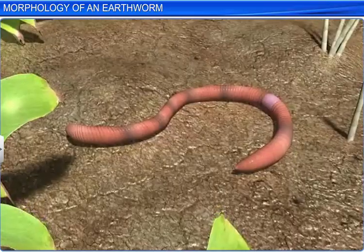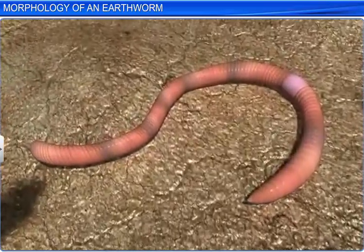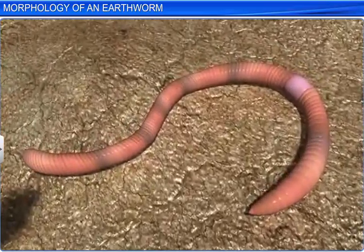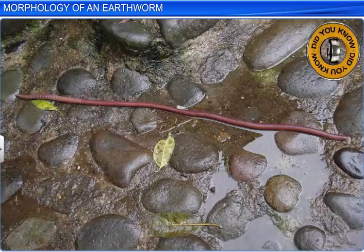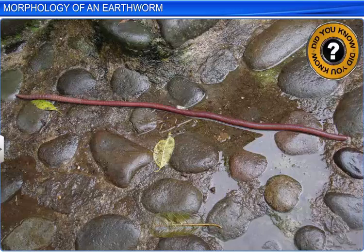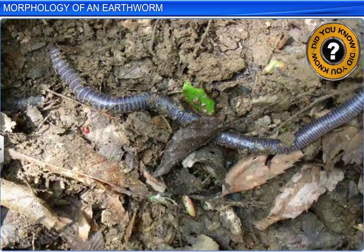Earthworms have a long cylindrical body that is divided into similar segments. Some species have a body made up of over 100 to 120 segments. Some giant species of earthworms have an average length of 80 centimeters and a diameter of 2 centimeters.